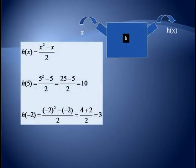Our next function uses the rule that if x is input, the output is x squared minus x divided by 2. So, H(5) says to plug 5 in for x, which is 25 minus 5 divided by 2, or 10. H(−2) says to plug in negative 2 for x. Now, be careful with the negative sign. We get a positive 4 plus 2 divided by 2, or 3.